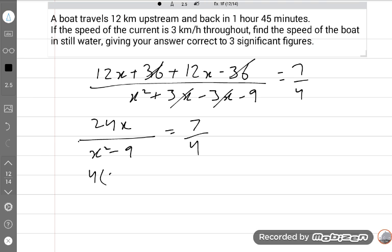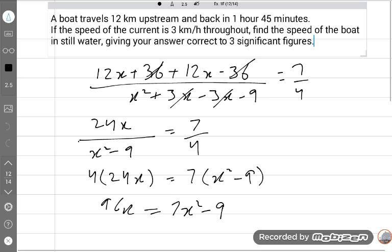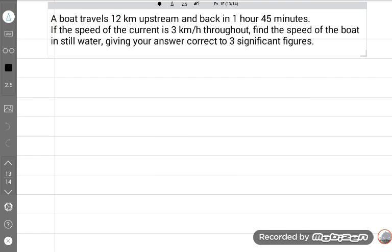4 into 24x is equal to 7 into x squared minus 9. So 96x is equal to 7x squared minus 63. We will arrange this equation and make a perfect quadratic equation: 7x squared minus 96x minus 63 equals zero.